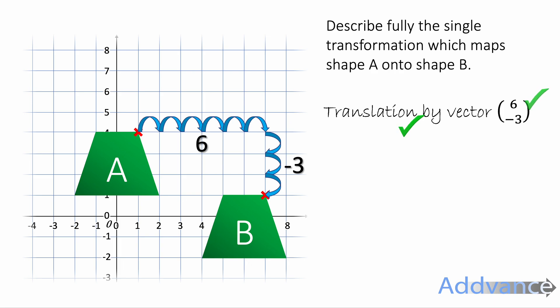We get one mark for saying translation, one mark for saying 6 and one mark for saying minus 3 as a vector. And that's for three marks in an exam.